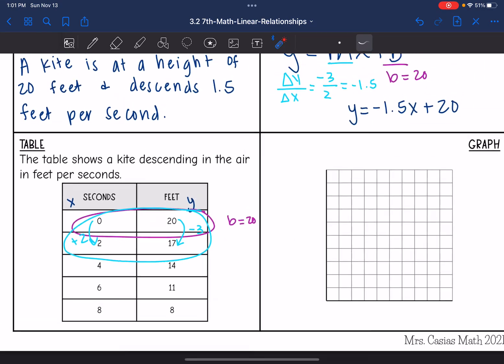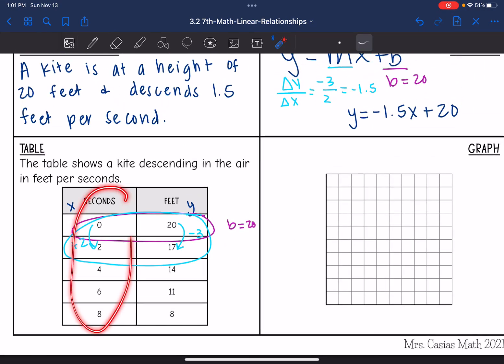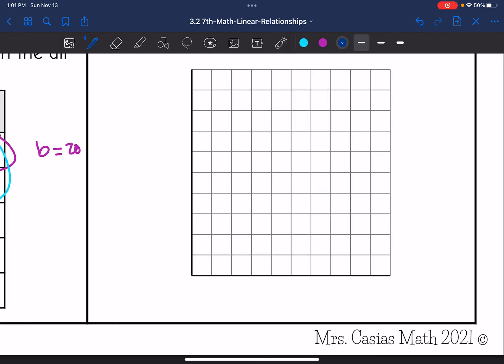Okay, last thing, let's make the graph. So my seconds, I go from 0 to 8. I can just count by 1s. And then my y-axis is going to be feet, and I'm going from 20 to 8. So I'm going to count by 2s on the y-axis. So the x-axis is the seconds, and I'm going to count by 1s. And then the y-axis is the feet, and I'm going to count by 2s.